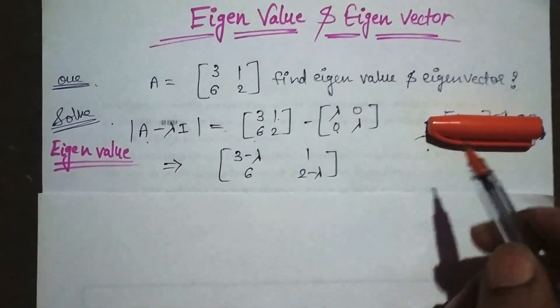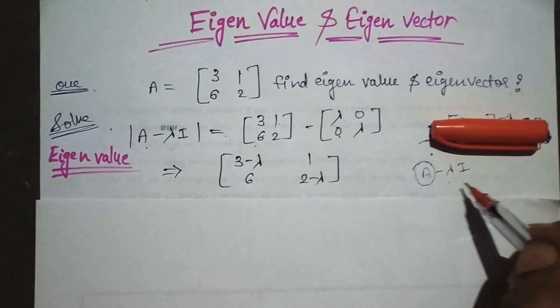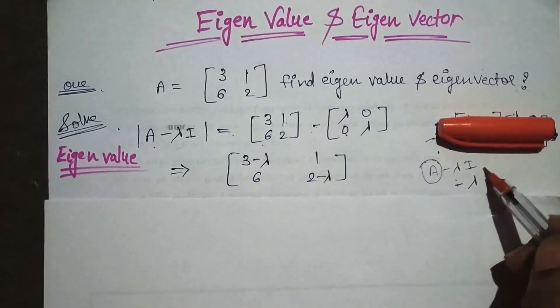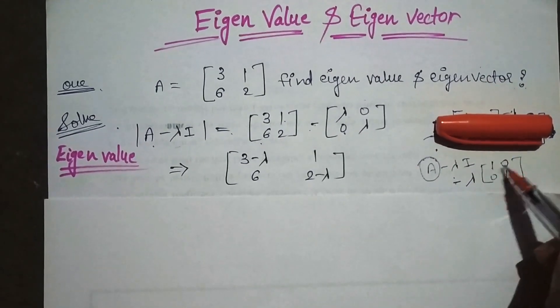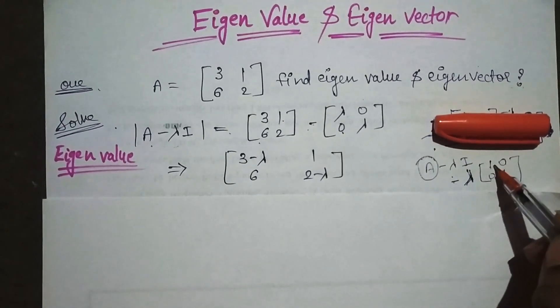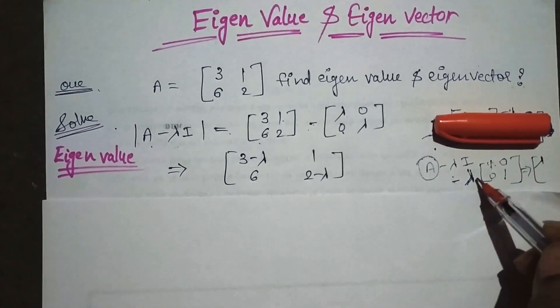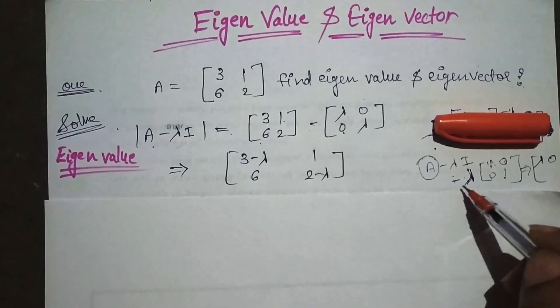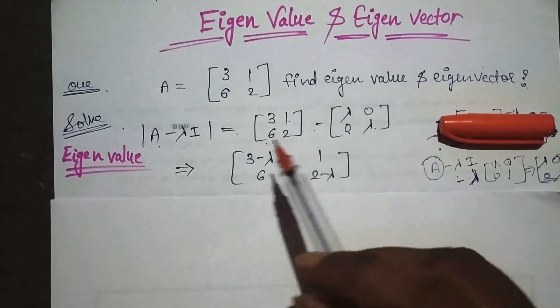Lambda is here, and I is the unit matrix with values [1,0; 0,1]. When we multiply lambda with this matrix, one changes to lambda, and zero multiplied by anything remains zero. This is the solution.